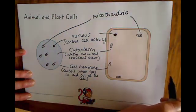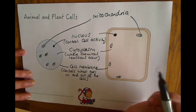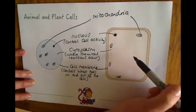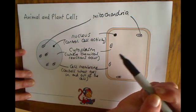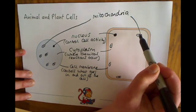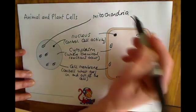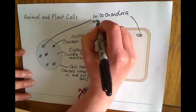And in the mitochondria, this is where respiration takes place. So both plants and animal cells respire, and where respiration happens is inside of these mitochondria. So this is where respiration takes place.